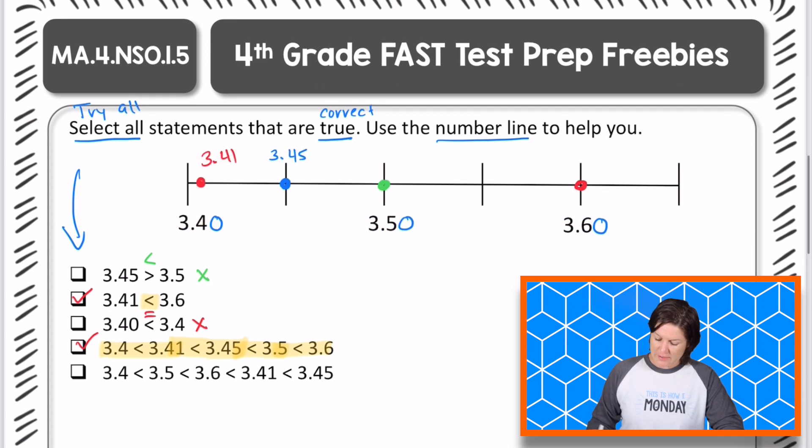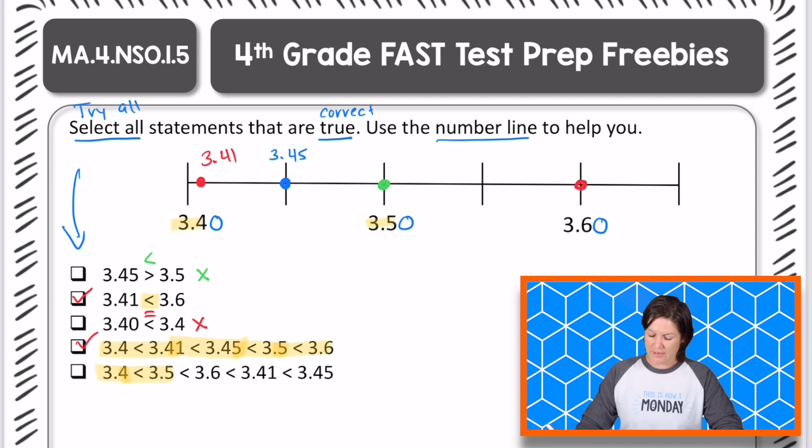So let's check out that final one and decide if it is worthy of keeping or if it is false. So now we have 3.4 tenths. Is that less than 3.5 tenths? Here's 3.4 tenths. Here's 3.5 tenths. Is 3.4 tenths less than 3.5 tenths? Yes. So we can keep it.